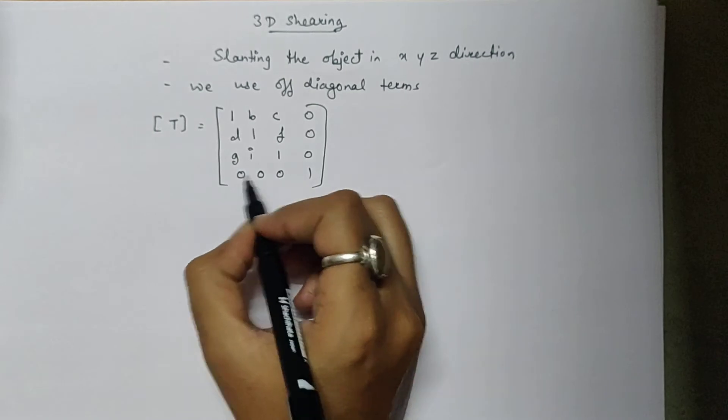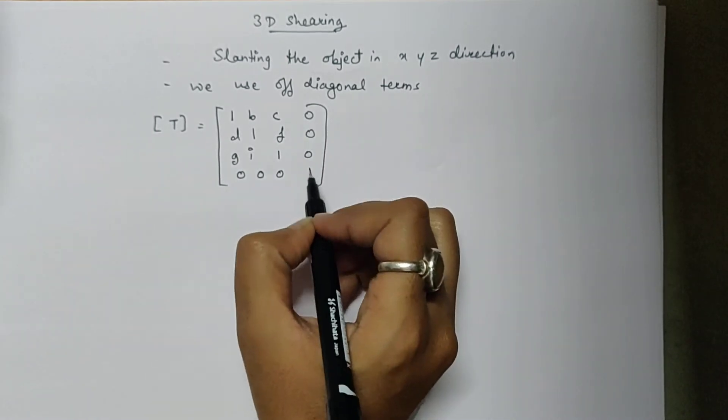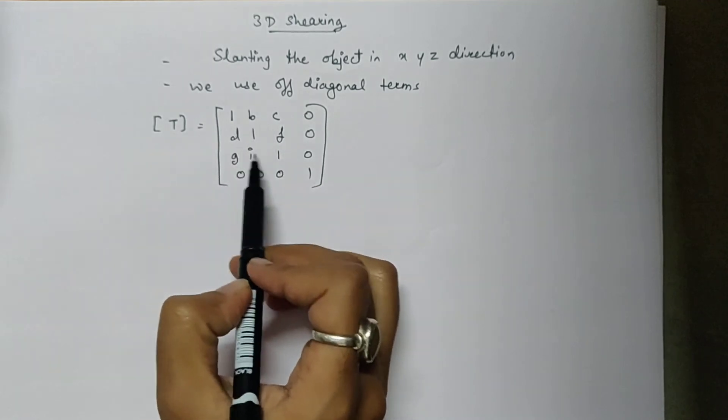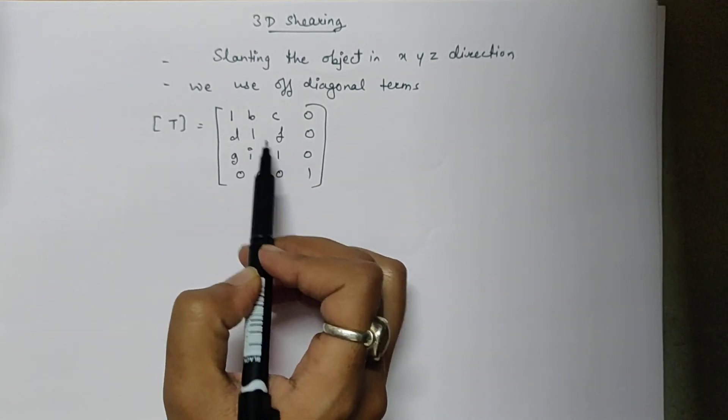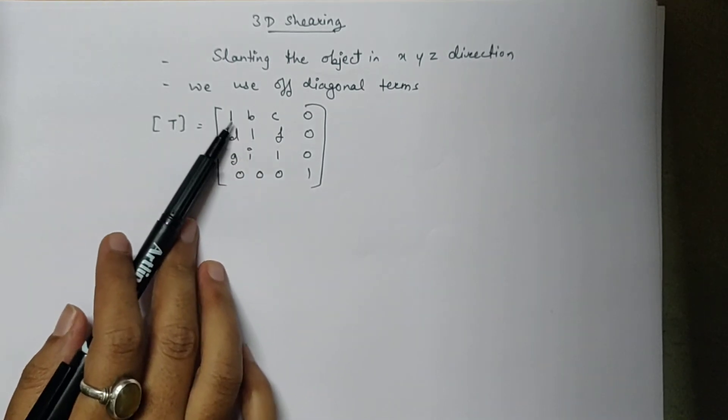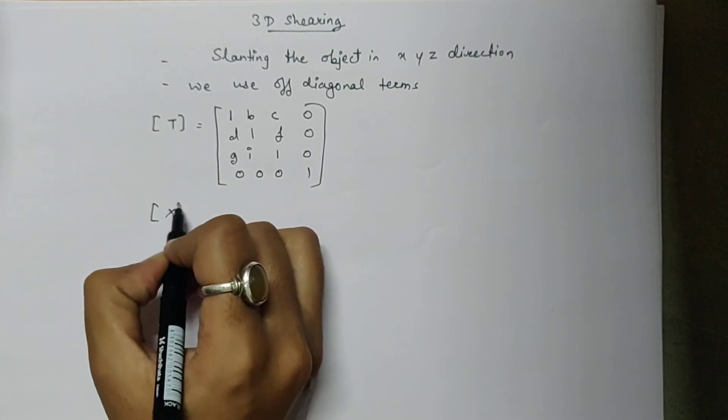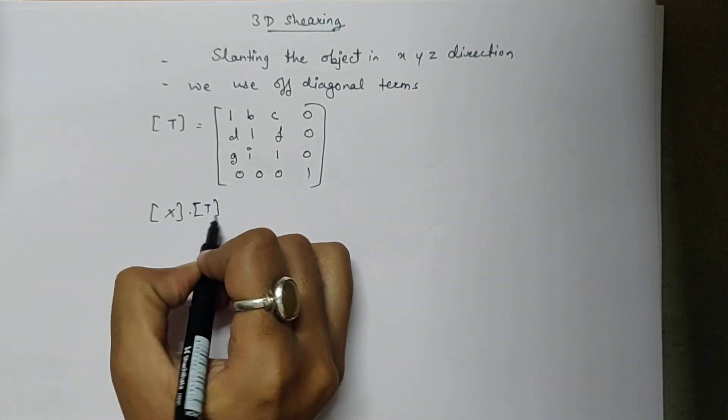The last row and last column are homogeneous coordinates. Only the 3 by 3 matrix is considered. Here, the off-diagonal terms are used and diagonal terms are written as 1. Now, to calculate X times T...